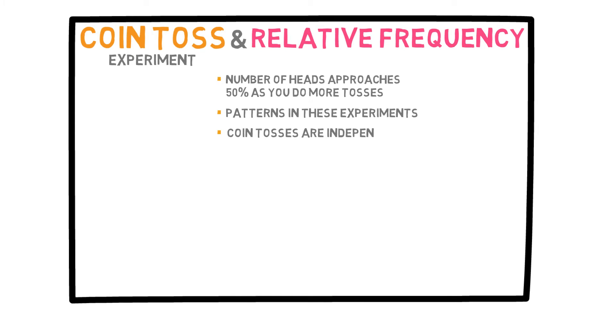Remember that coin tosses are independent, so it does not matter what the previous result was. If I ask you what the probability of observing one heads and then one tails is, you would say that, since they are independent, you multiply the probability of heads by the probability of tails, which is 0.5 times 0.5 or 0.25.